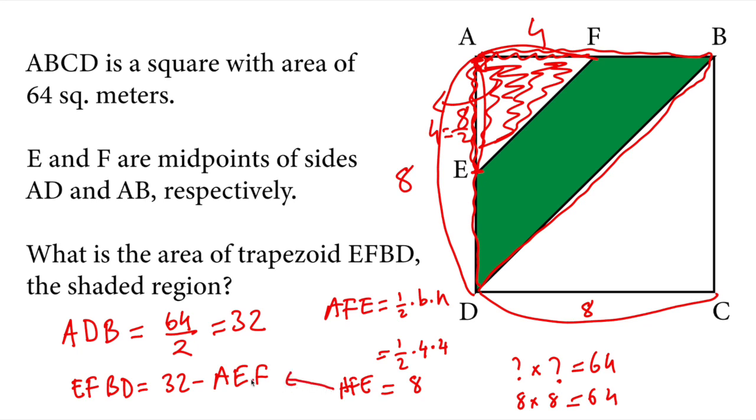If we can plug into this equation we had here, the green area EFBD will be 32 minus 8 equals 24 square meters.